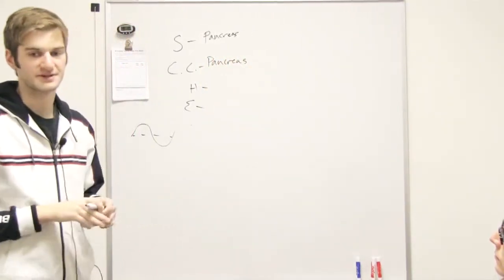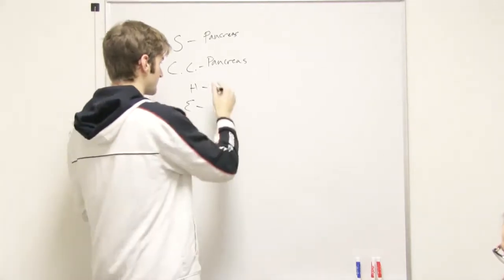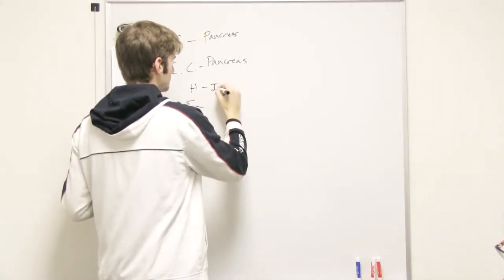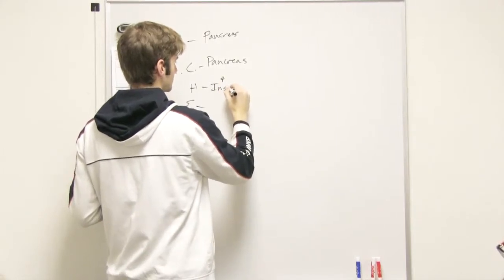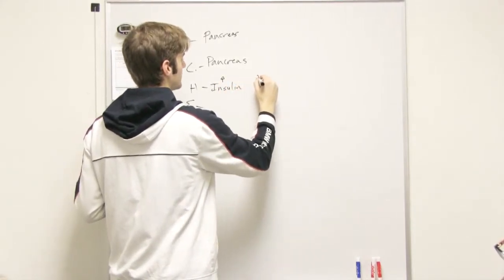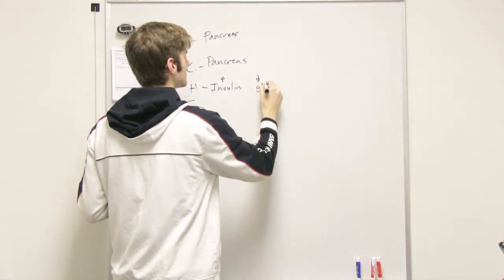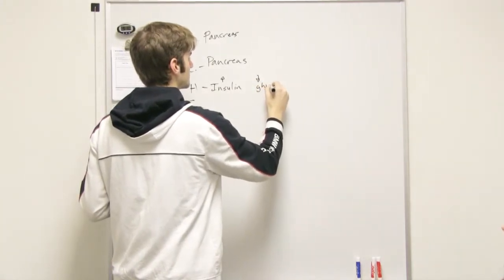Then it's also the control center because it either puts out insulin if blood sugar is too high, or glucagon if it's too low.